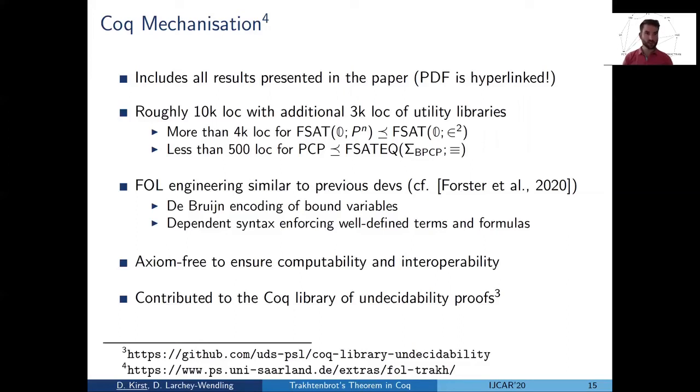Then some stats. We roughly have 10,000 lines of code. And the interesting thing is where the hard parts of the development lie. We have almost half of these 10,000 lines for the last reduction, for compressing relations to binary membership. Whereas the main idea of Trachtenbrot's proof is just 500 lines. So here it also expresses that our new proof strategy using PCP is really compact. Not only on paper, also mechanized in Coq. This is a very compact proof.